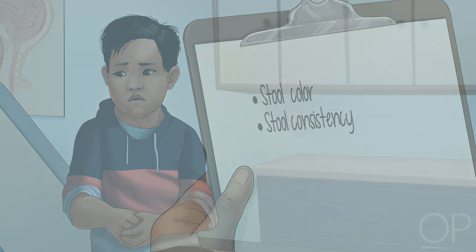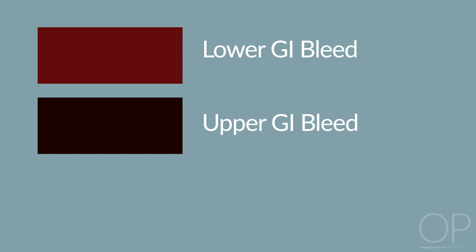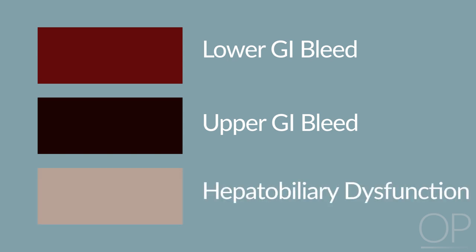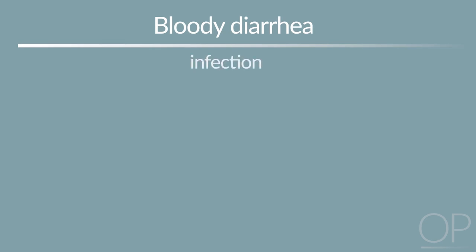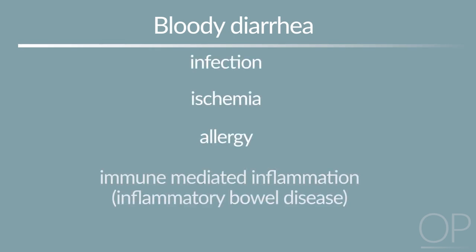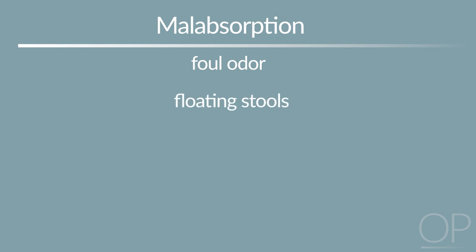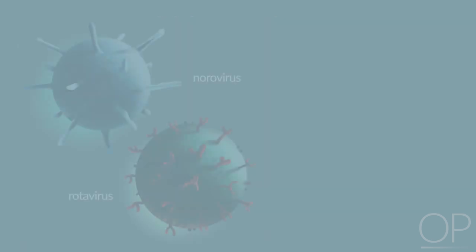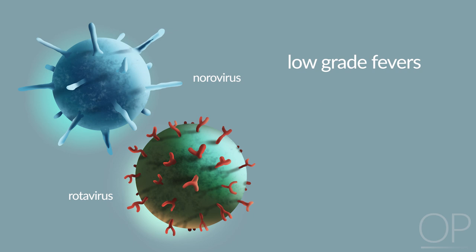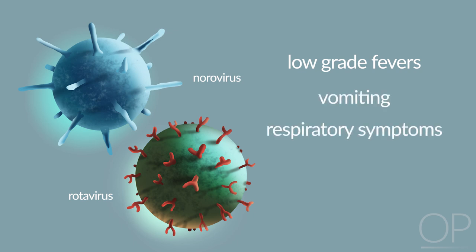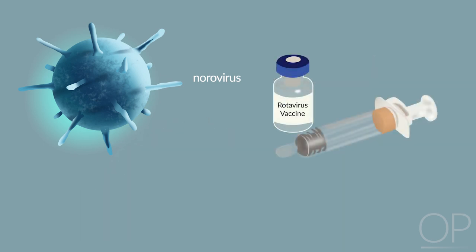Color and consistency are two important factors to consider when creating a differential diagnosis. Troubling colors include red and black, which could indicate a lower versus upper GI bleed respectively, and white, indicating a hepatobiliary source. Bloody diarrhea may be due to infection, ischemia, allergy, or immune-mediated inflammation such as inflammatory bowel disease. Foul-smelling or floating stools, or the presence of mucus, fat, or undigested food particles, can all suggest malabsorption. Diarrhea associated with low-grade fevers, vomiting, or respiratory symptoms is more consistent with viral causes of acute diarrhea. Where the rotavirus vaccine is available, norovirus is now the leading cause of viral gastroenteritis in children.